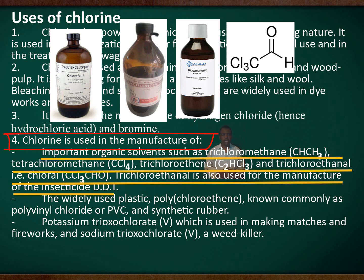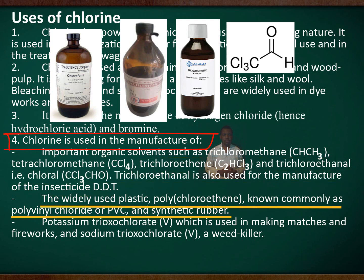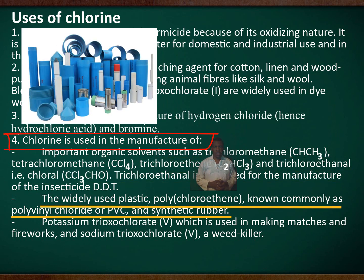Trichloroethanol is also used in the manufacture of the insecticide DDT. Chlorine is used to make the widely used plastic polychloroethene, known commonly as polyvinyl chloride or PVC, and synthetic rubber.